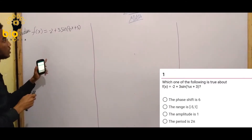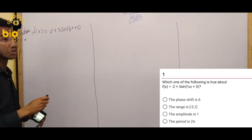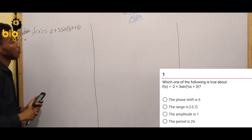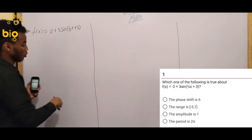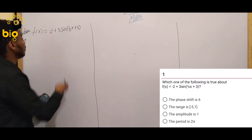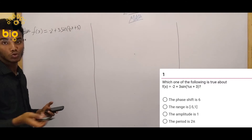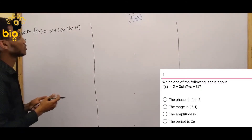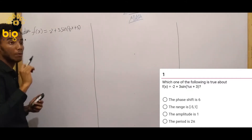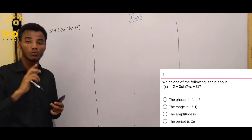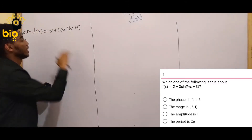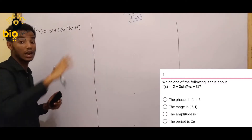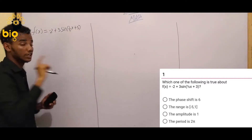You know the trigonometric function. So let's look at the function. The amplitude, the face shift (phase shift) — let's find the face angle. The face shift: we look at the x coefficient inside the function.